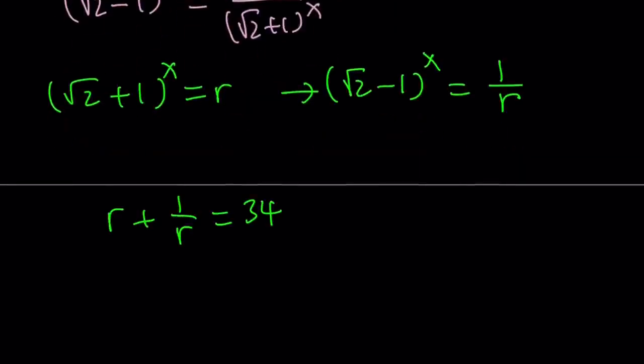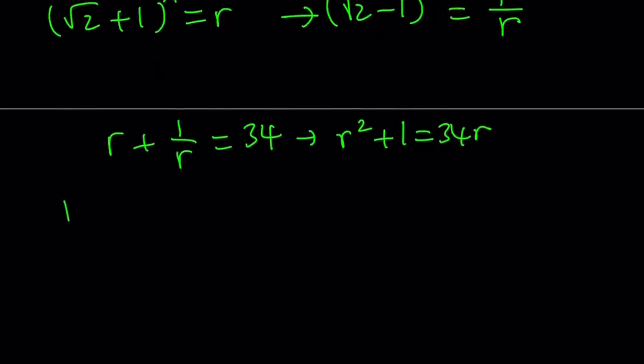This is going to turn into a quadratic equation. If you multiply everything by r, we get r squared plus 1 equals 34r. Let's go ahead and bring the 34r to the left hand side. And then we're going to have our quadratic.